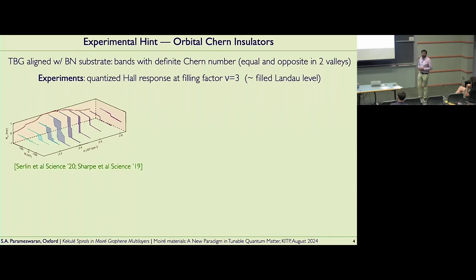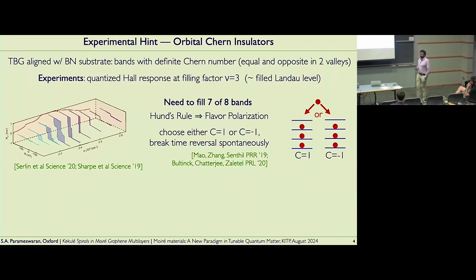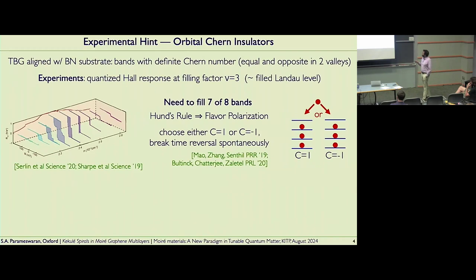There were these very inspiring experiments, first done in David Goldhaber-Gordon's group and then performed also by Andrea's group, that saw when you align TBG with hBN you get very strong quantized anomalous Hall response at certain filling factors — consistent with there being bands with a definite Chern number. Because time reversal isn't broken, there needs to be some mechanism to spontaneously break it. Two different groups came up with the theoretical picture: a simple Hund's rule mechanism to flavor-polarize these bands.